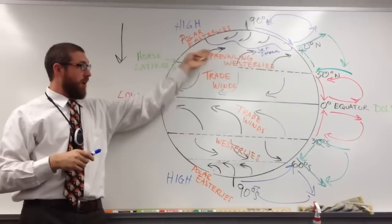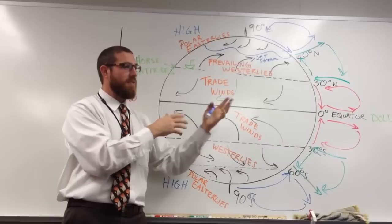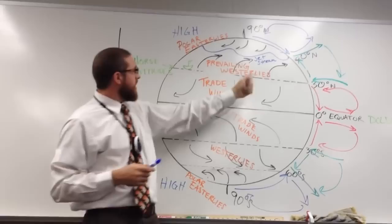The jet stream is interesting because it changes on an almost daily basis — you never know exactly where it is. The area at 30 degrees south, the mid-latitudes of the Southern Hemisphere, will also be horse latitudes. Everything that happens in the Northern Hemisphere is mirrored in the Southern Hemisphere.